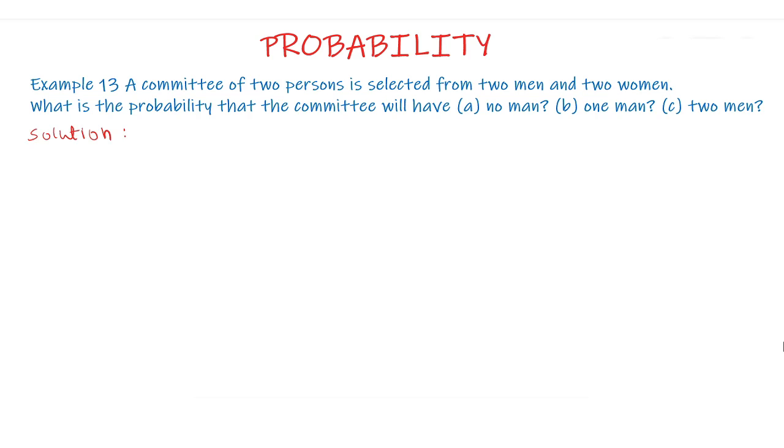We have the solution of this question like this. There are two men and two women available and we have to make the committee of two persons. First we will have to find out the total number of committees that can be formed of two persons from four persons of two men and two women.